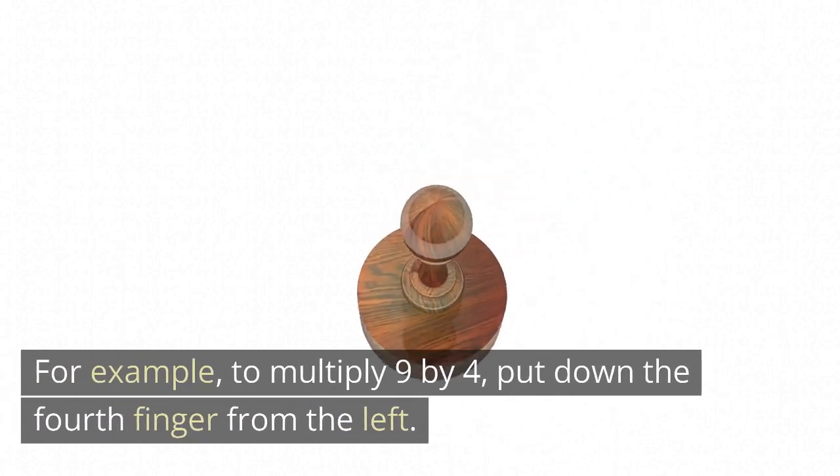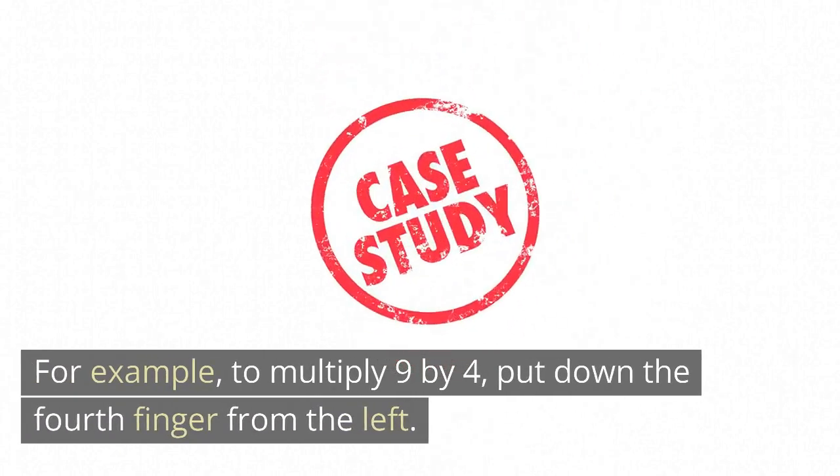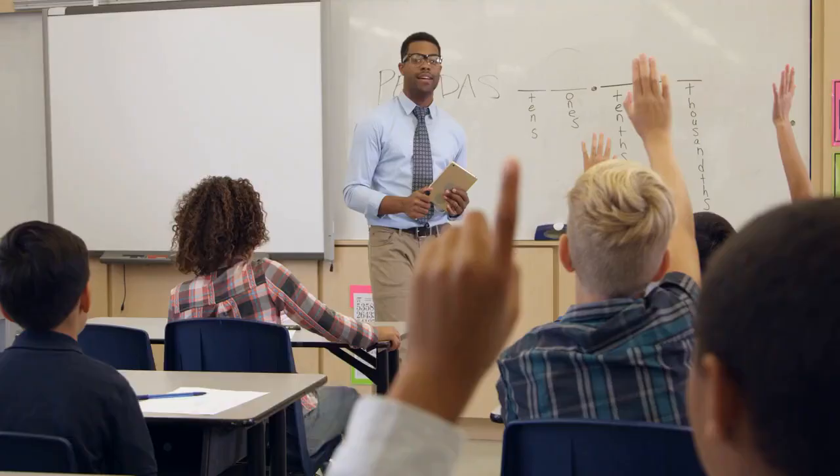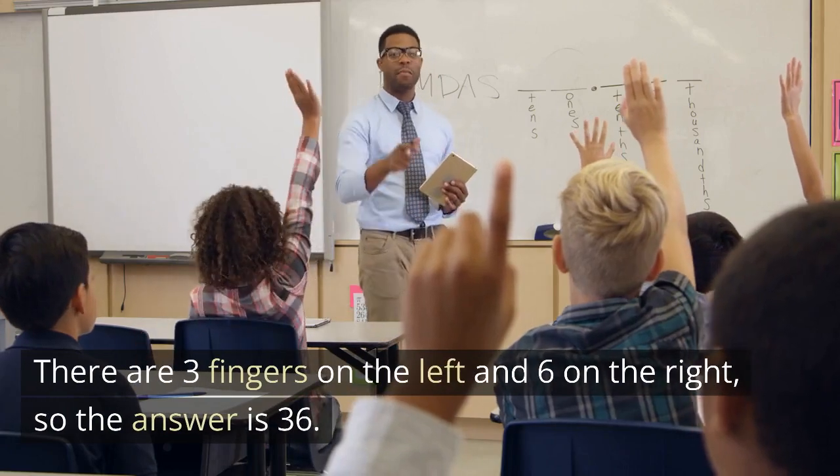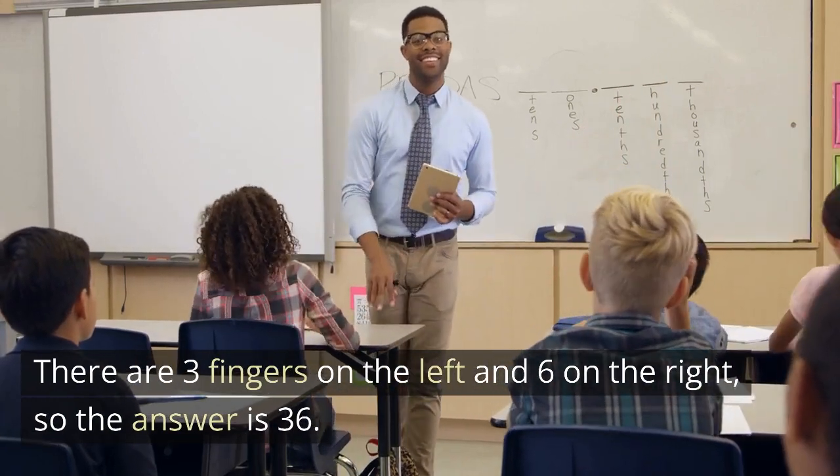For example, to multiply 9 by 4, put down the fourth finger from the left. There are 3 fingers on the left and 6 on the right, so the answer is 36.